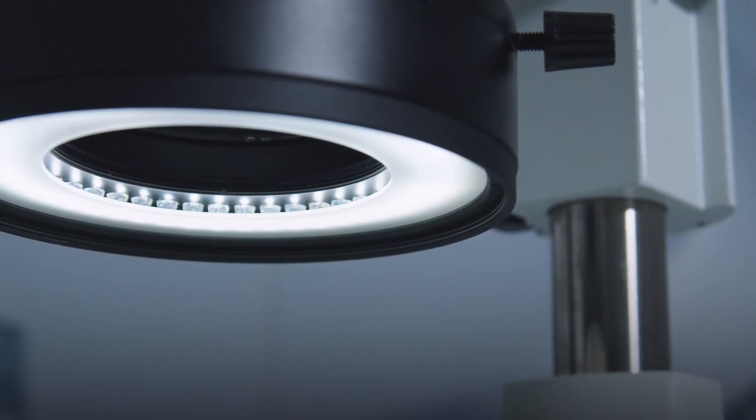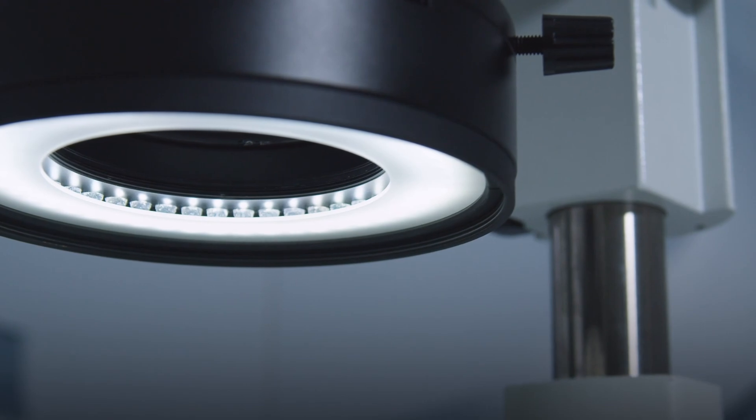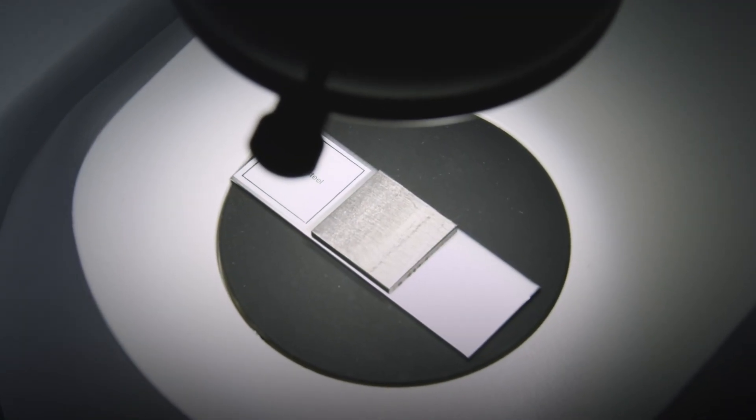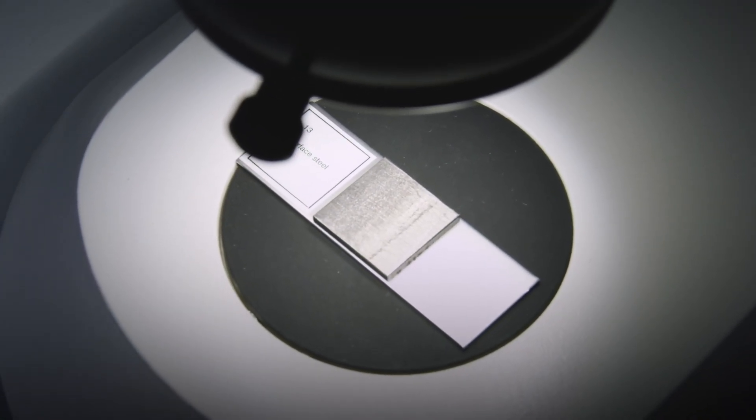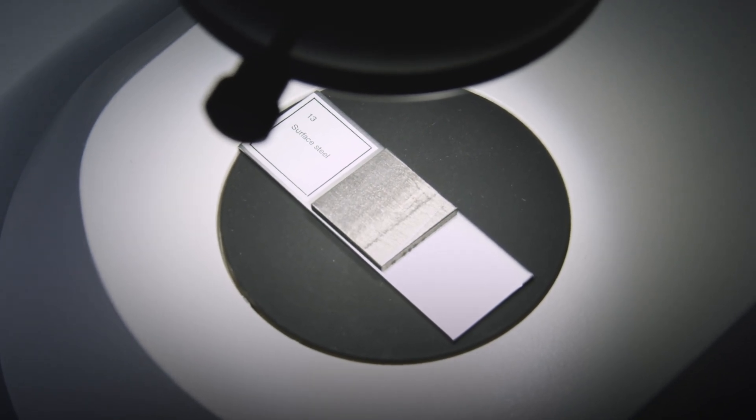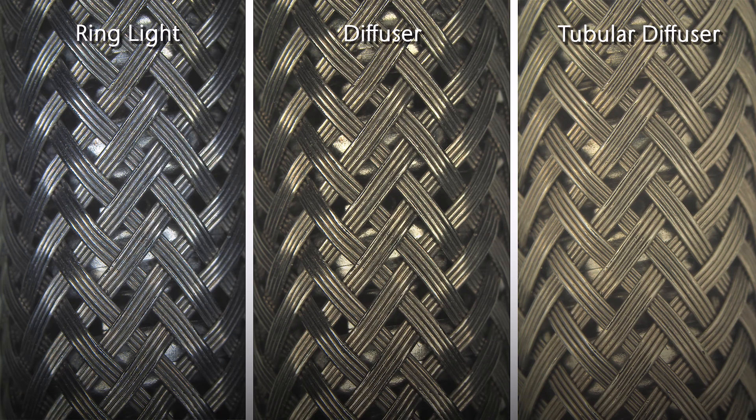Conventional diffusers, typically mounted directly in front of the ring light, do not restrict access to the sample. However, the sample is illuminated with a much less diffused light. Here you can see a direct comparison of a braided hose jacket.